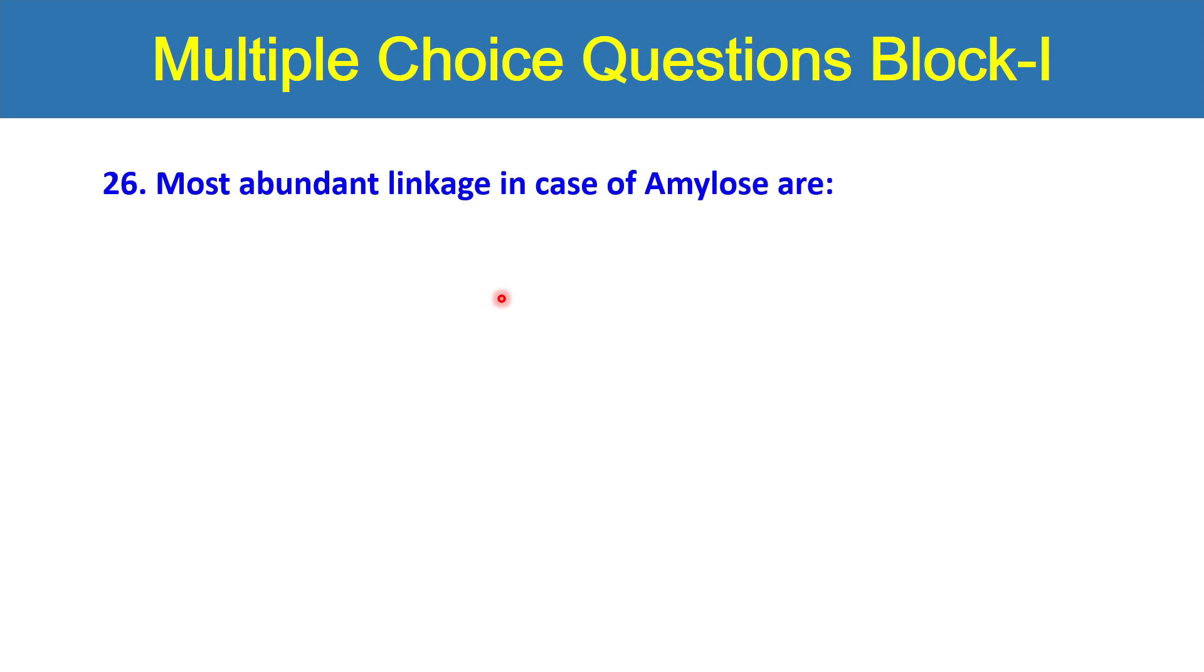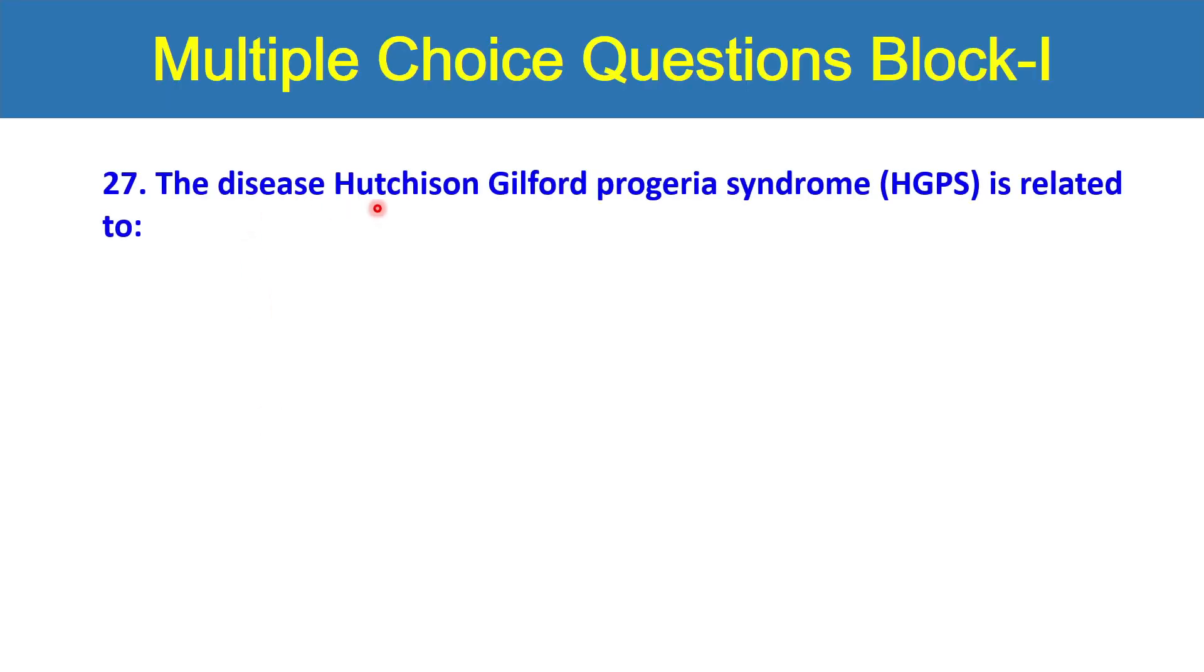Question number 26: most abundant linkage in case of amylose are alpha-1,6, 1-2, 1-4, beta, alpha-1,4, or alpha-1,1 linkage? The next question is the disease Hutchinson Gilford Progeria syndrome, that is HGPS, is related to mitochondria, lysosomes, nucleus, Golgi apparatus, or smooth endoplasmic reticulum? Which of the cell organelle is involved or directly related to the HGPS syndrome?